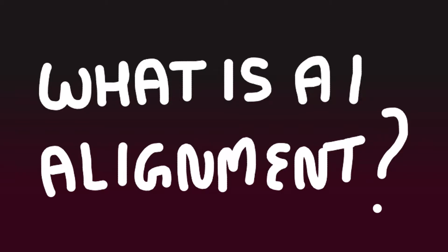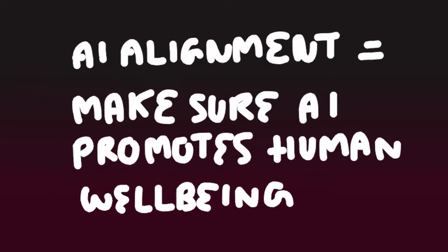What is AI alignment? AI alignment concerns the task of making sure that artificially intelligent systems behave in a way that is conducive to human morality and human well-being.